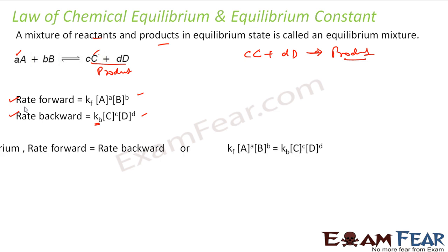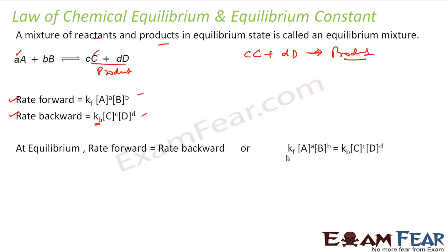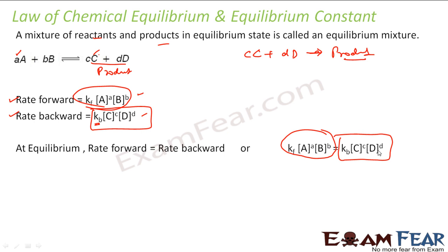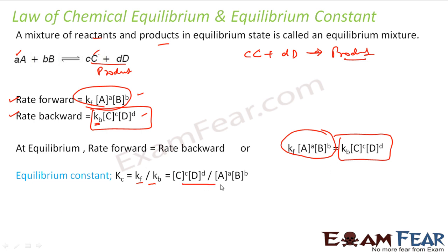At equilibrium, the rate of the forward reaction equals the rate of the backward reaction. Equating these, we find that kf divided by kb is a constant, and this equals [C] to the power c times [D] to the power d, divided by [A] to the power a times [B] to the power b. This ratio is the equilibrium constant, denoted by Kc. We obtained Kc from the Law of Mass Action.